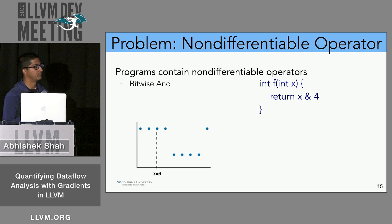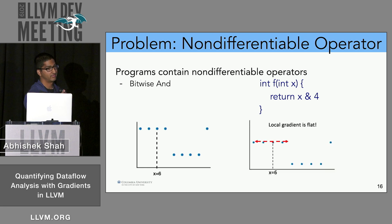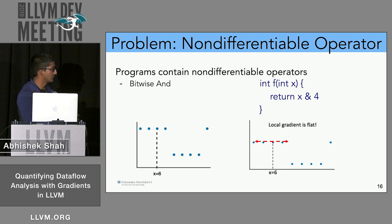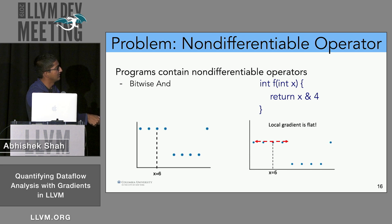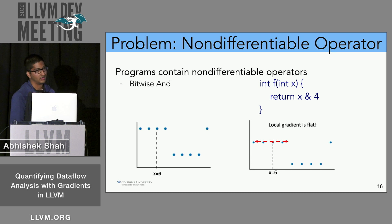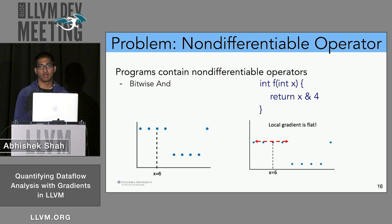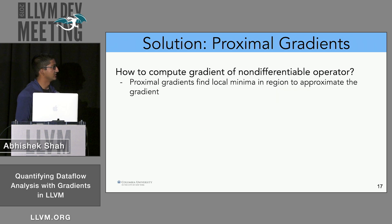To compute a gradient in this non-smooth regime, one approach is to take the point to the left or right as an approximation. Another approach is to sample the region around the evaluation point — say x equals 6 — looking at 7, 8, 9, 10, and picking the minimum, or the closest one if there are multiple minima. This idea is captured by proximal gradients, which find local minima in a bounded region to approximate the gradient.